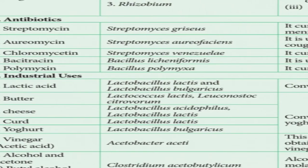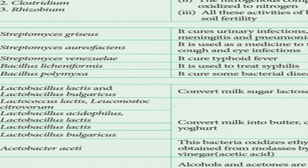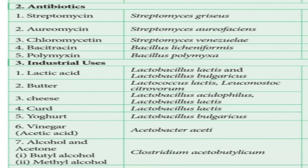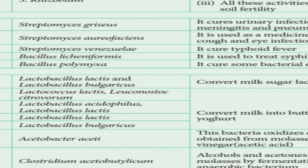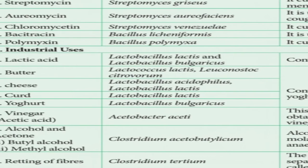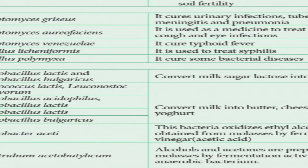Chloromycetin is derived from Streptomyces venezuelae and it cures typhoid fever. Bacitracin, derived from Bacillus licheniformis, is given to treat syphilis, which is an STD — a sexually transmitted disease. Polymyxin, derived from Bacillus polymyxa, cures various bacterial diseases.